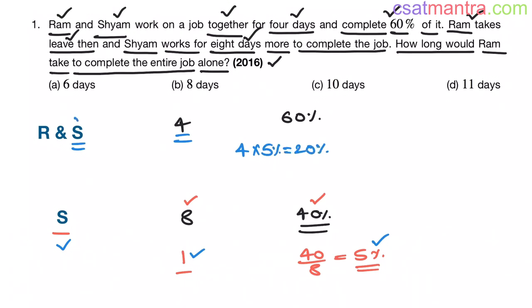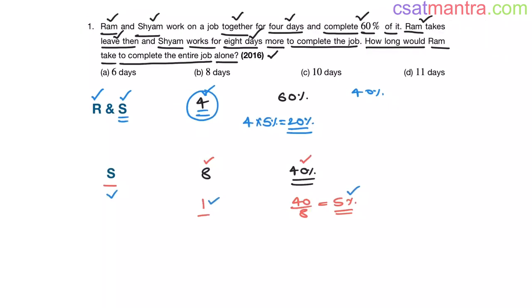So, Shyam has done 20% of work in 4 days. Now, the remaining work, that is 40%, is completed by Ram. In 4 days. So, Ram completes 40% of the work in 4 days.